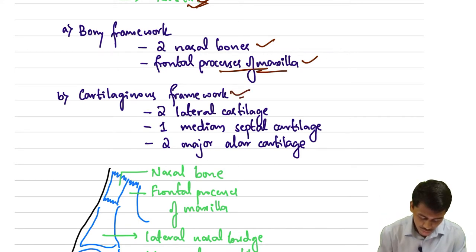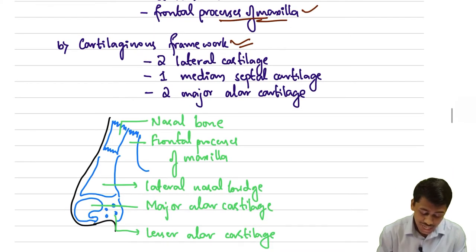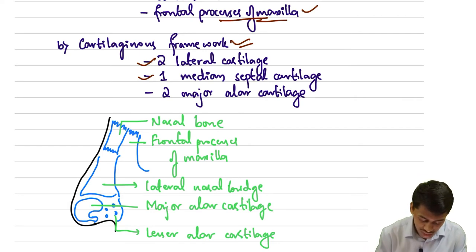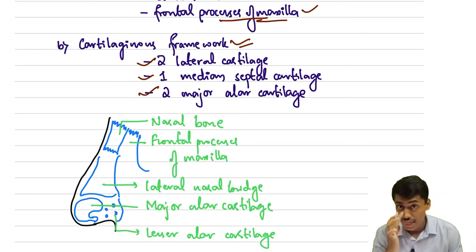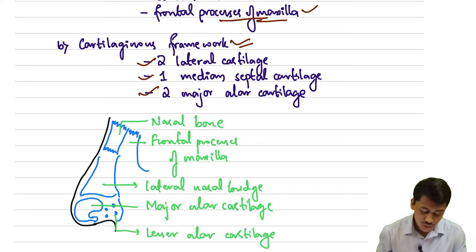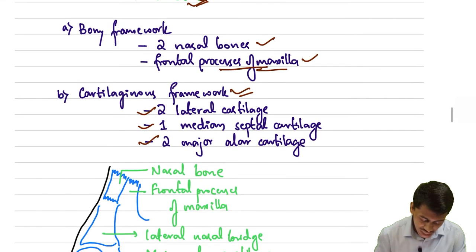The cartilaginous framework is formed by two lateral cartilages, one median septal cartilage on the inside, and two major alar cartilages. So in summary: two lateral cartilages, one medial septal cartilage, and two alar cartilages form the cartilaginous framework.